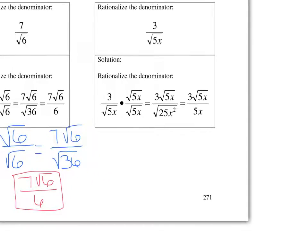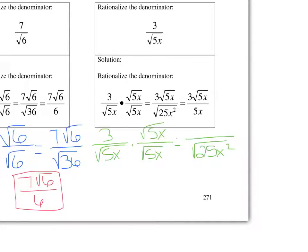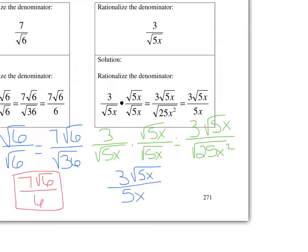Now the same thing for this question: we have 3 over the square root of 5x. I want to get rid of the square root of 5x, so I'm going to multiply it times itself. That gives me the square root of 25x squared in the denominator. Whatever I do in the denominator, I also have to do in the numerator, so 3 times the square root of 5x gives me 3 square root of 5x. Now I simplify the denominator — the square root of 25 is 5 and the square root of x squared is x — so the final answer is 3 square root of 5x over 5x.